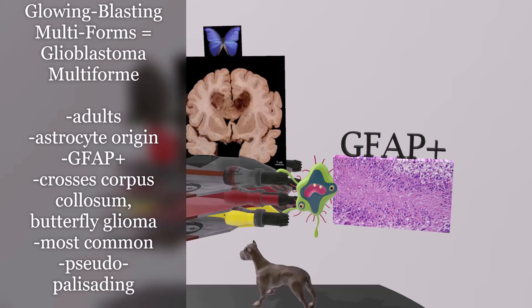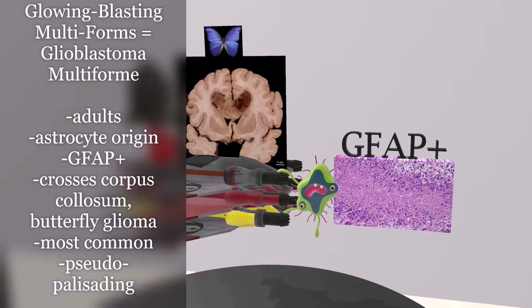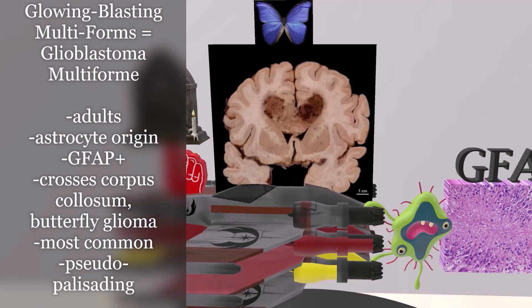GFAP is a marker of the intermediate filament found in glial cells. If we take a look over here, we note a classic picture associated with glioblastoma multiforme, where we see the tumor crossing the corpus callosum — the midline structure of the brain — which is why it's also known as a butterfly glioma, because the morphology has a butterfly look.